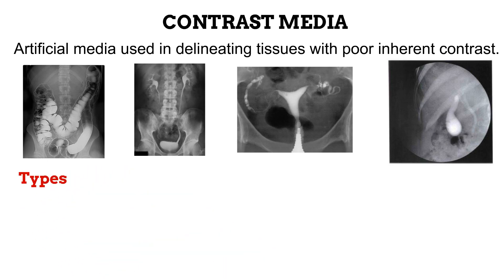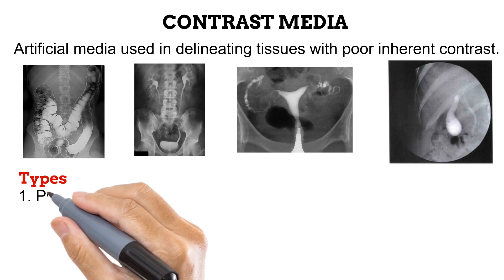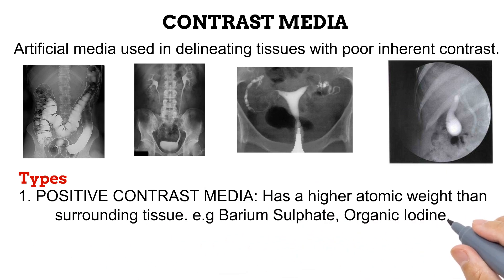Let us start by grouping them based on their atomic weight. Under this classification, we have the positive and negative contrast media. The positive contrast media has its name because it possesses a higher atomic weight than the tissue it is introduced into. This means that it will absorb more photons than the surrounding tissue and would produce a lower radiographic density. Examples of positive contrast media include barium sulfate and organic iodine.